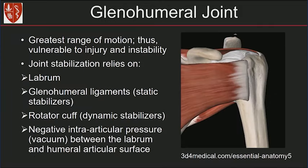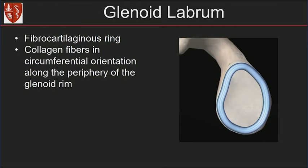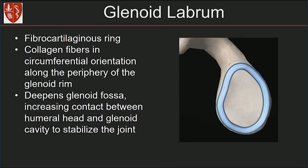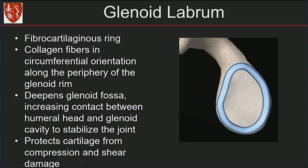The negative intra-articular pressure, which is the vacuum between the labrum and the humeral articular surface, also plays a role. The labrum is a fibrocartilaginous ring with collagen fibers in a circumferential orientation along the periphery of the glenoid rim. It deepens the glenoid fossa, increasing the contact between the humeral head and the glenoid cavity to stabilize the joint.